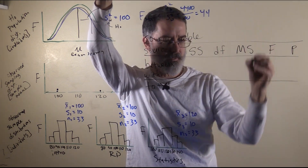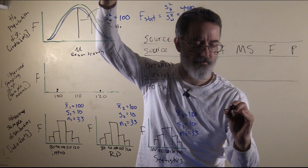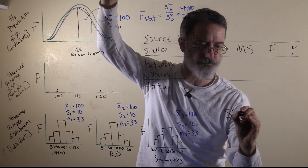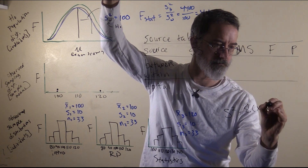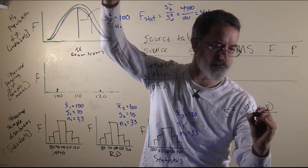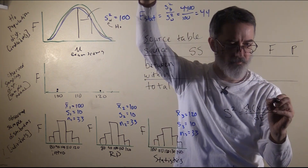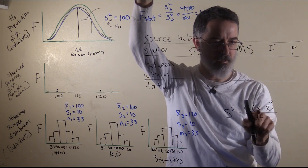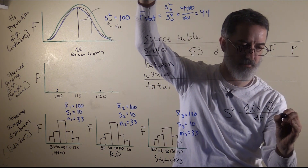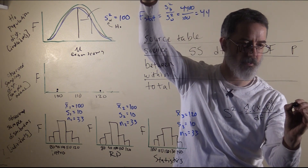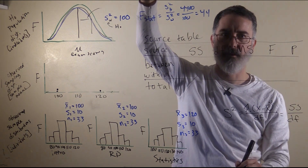The sums of squares — if we think about our variance formula — sums of squares just refers to the stuff on top, the sum of the squared deviations. That is what sums of squares means. So you could actually rewrite the variance formula as sums of squares over degrees of freedom.